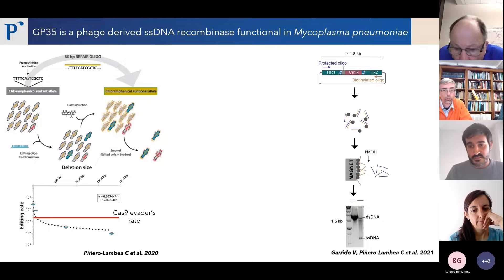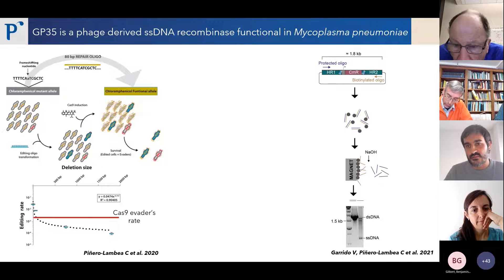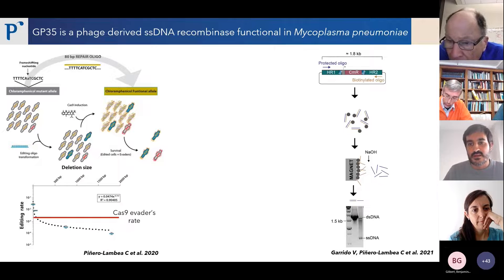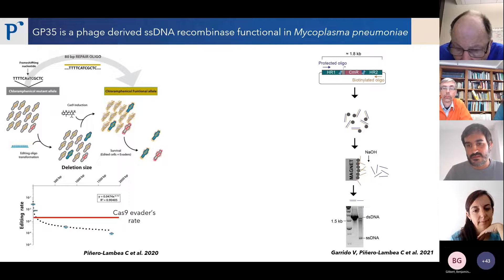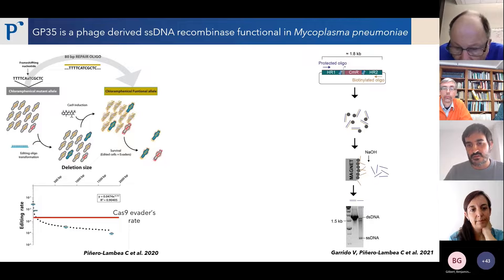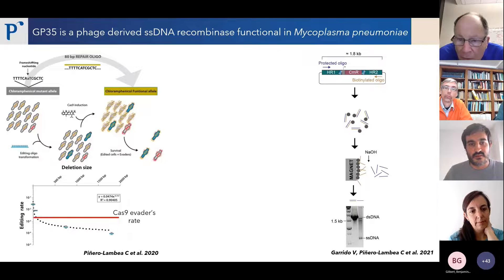We moved to another system where we created a PCR cassette carrying homology regions and a resistance marker. Since GP35 is a single-strand DNA recombinase, we generated a single-strand DNA fragment using a PCR with a protected oligo and a biotinylated oligo, incubated the PCR product with magnetic beads, disrupted the interaction between both strands with sodium hydroxide, and ended up with a single-strand DNA substrate that was transformed into cells, with GP35 introducing it into the replication fork.